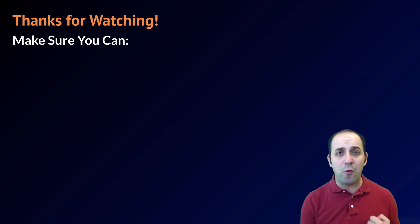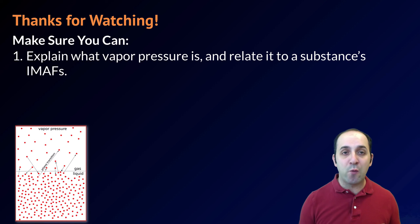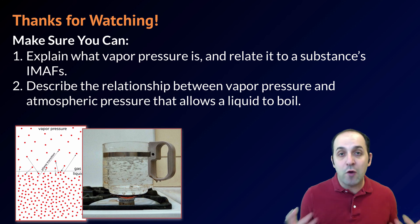Make sure that you can do the following things here at the end of this lesson. Make sure that you can explain what vapor pressure is and relate it to a substance's intermolecular attractive forces. Make sure that you can describe the relationship between vapor pressure and atmospheric pressure that allows liquids to boil or keeps them from boiling at particular temperatures.